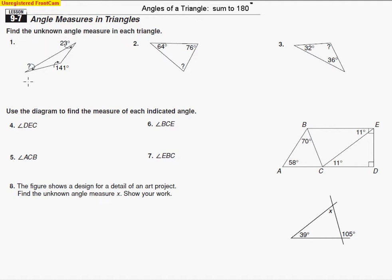So if we know that this angle is unknown — we'll call it x — and this angle is 23 degrees, and this one is 141, all of these add up to make 180 degrees. So you're going to start by adding the two that you do know: 23 plus 141. When you add those two numbers together, you end up with 164 degrees, plus x, equals 180.